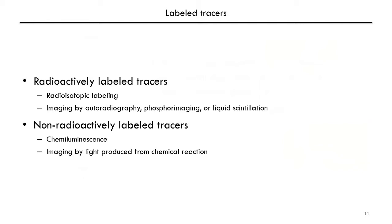We've already touched on some examples of radioisotopic labeling. You can replace some atom in your molecule with a radioactive isotope to track it, and you can image it by autoradiography, phosphor imaging, or you can detect it by liquid scintillation. We'll talk about the first two examples in the next few slides.